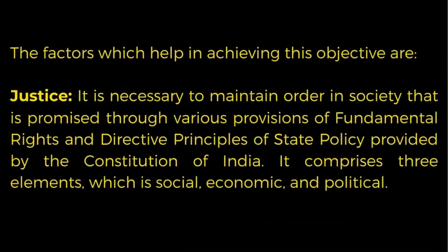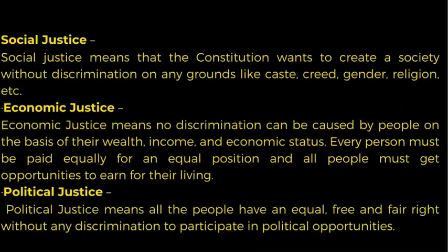The factors which help in achieving this objective are: Justice — it is necessary to maintain order in society, promised through various provisions such as fundamental rights and directive principles of state policy. It comprises three elements: social, economic, and political. Social justice means the constitution wants to create a society without discrimination on grounds like caste, creed, gender, or religion. Economic justice means no discrimination based on wealth, income, or economic status — every person must be paid equally for an equal position and all people must get opportunities to earn a living. Political justice means people have an equal, free, and fair right without any discrimination to participate in political activities and opportunities.